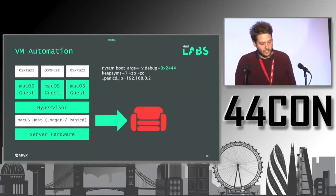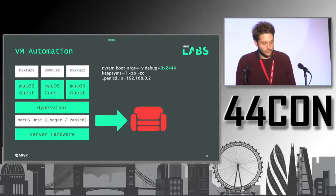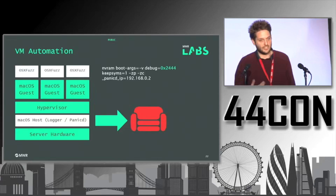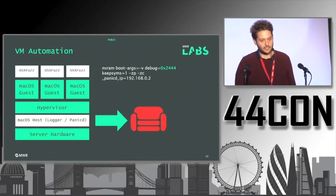We have a bunch of OSX fuzzers running on macOS guests on top of a hypervisor, with our logger and Python scripts controlling everything on the host alongside the panic daemon. We have three or four Macs set up that push all crashes out to CouchDB, giving us a centralized place for crashes. We also do basic deduplication — if another host has seen the same crash, we discard it — and we do some basic exploitability checks as well.